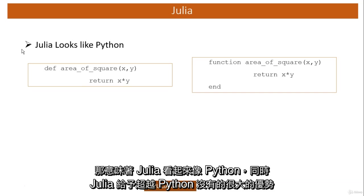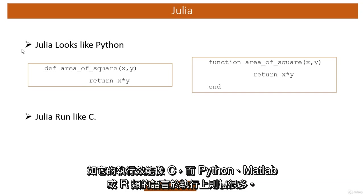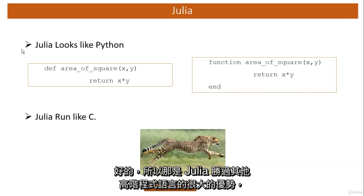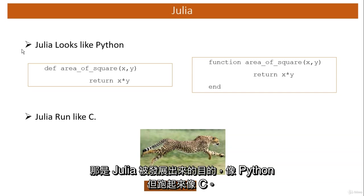At the same time, Julia gives a big advantage over Python — it runs like C, whereas Python, MATLAB, or R are very much slow in execution. That is the big advantage Julia gives over any other high-level programming language, and that is the main purpose of Julia being developed: it looks like Python and it runs like C.